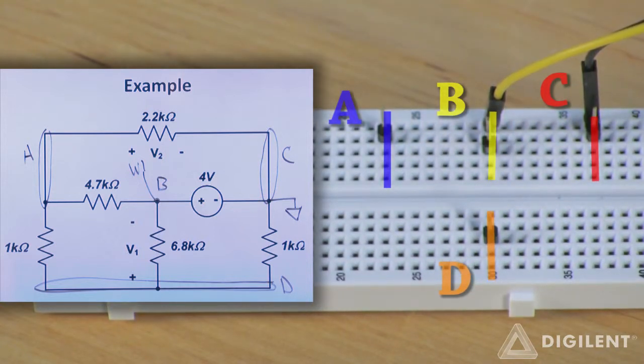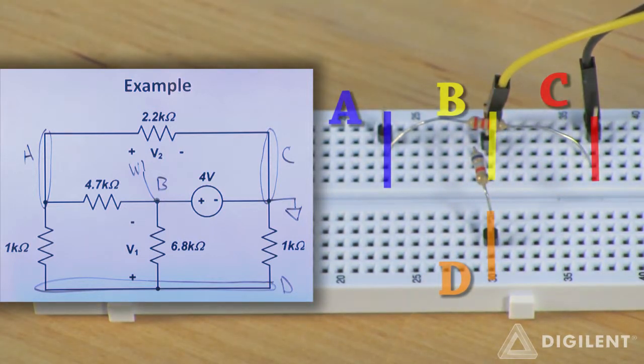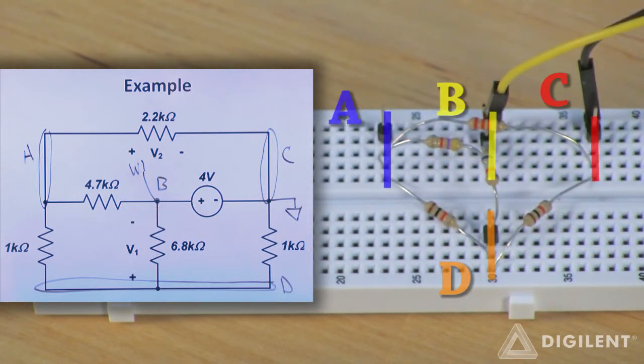Now I'll connect my resistors. I have a 2.2 kiloohm resistor between nodes A and C, a 6.8 kiloohm resistor between nodes B and D, a 4.7 kiloohm resistor between nodes A and B, and 1 kiloohm resistors between nodes A and D, and C and D.